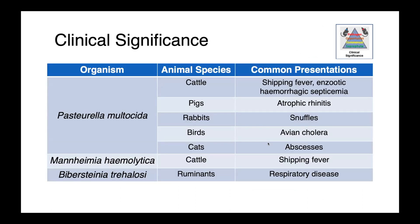Pasteurella multocida is perhaps the most promiscuous. In cattle, we see it as a cause of shipping fever or pneumonia in younger animals, and also enzootic hemorrhagic septicemia. In pigs, it causes atrophic rhinitis along with Bordetella bronchiseptica. In rabbits, it causes snuffles — a constellation of syndromes from the lower all the way up to the upper respiratory tract. In birds, we see avian cholera. In cats and other companion animal species, we see abscessation. Mannheimia haemolytica in cattle is also associated with shipping fever, frequently alongside Pasteurella multocida, and a similar story is true for Bibersteinia trehalosi, which is involved in respiratory disease and shipping fever.